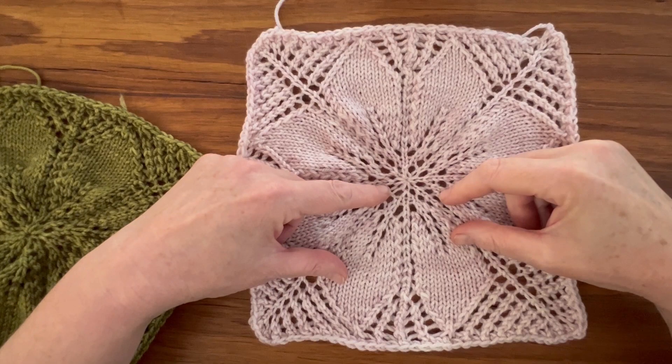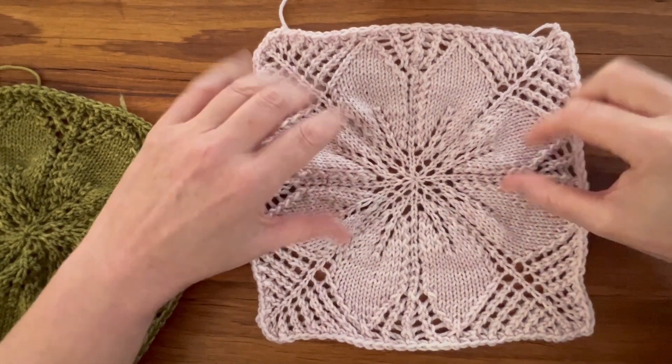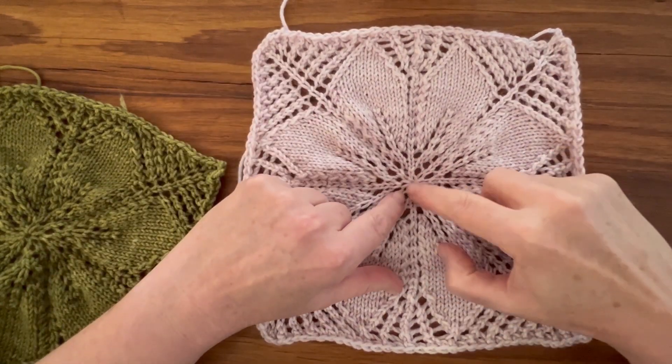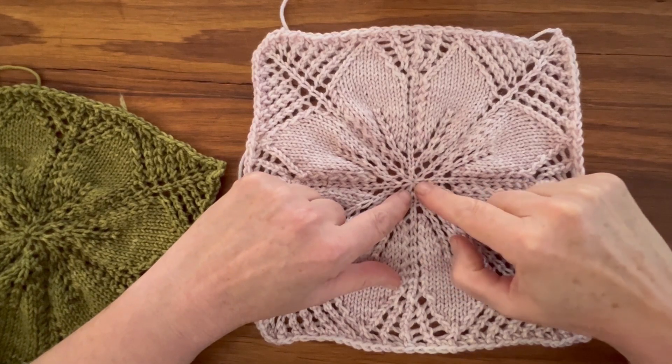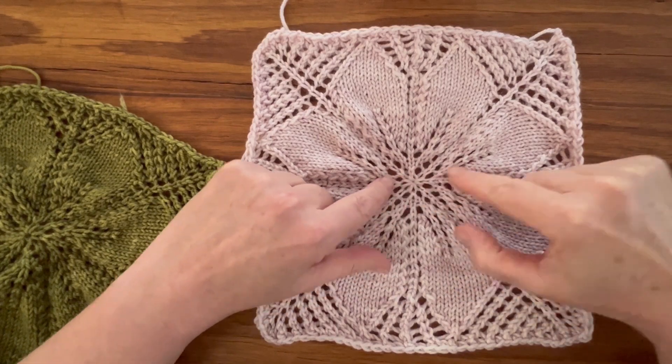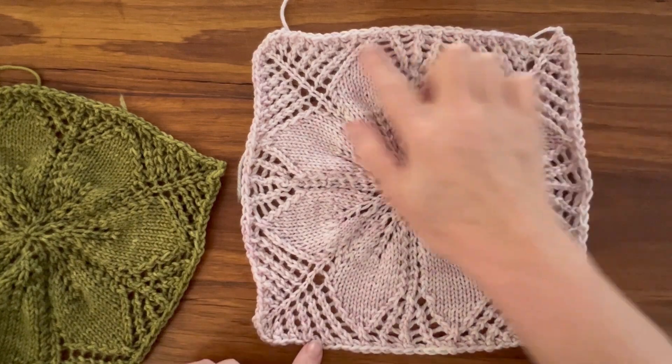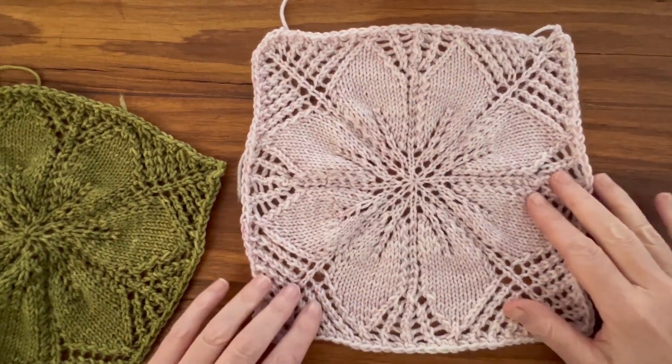You'll use this cast on for knitting where you're working center out like this square was started here. Eight stitches were cast on with the pinhole cast on and then it was knit out and bound off along these edges here.